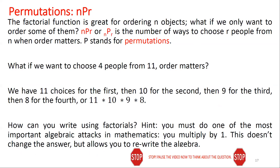And so now, what if we wanted to do something a little bit harder? What if we want to choose four people from 11 with order matters? Well, how many would there be for the first person? For the first one? 11. And the second? 10. And the third? 9 and 8. So if we want to choose four people from 11, the number of ways to do that if order matters is 11 times 10 times 9 times 8.